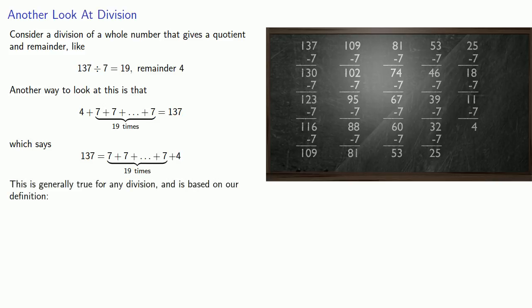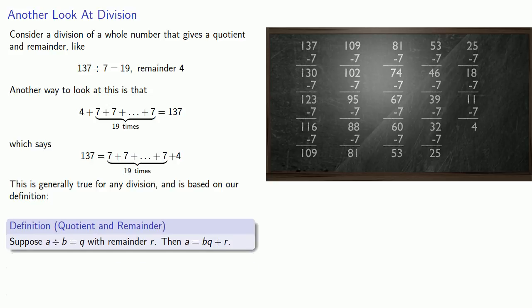Which says that 137 is 19 sevens plus 4. This is generally true for any division and is based on our definition. Suppose a divided by b is q with remainder r. Then a is equal to bq plus r. And what this means is that any time we have a quotient and remainder, we can rewrite it as a product and sum.